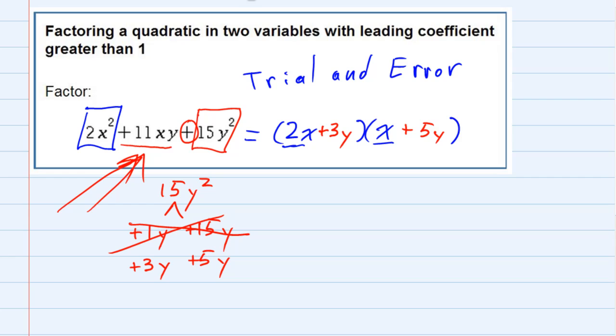And we'll see if that works. So switching the 3 and the 5, we will put the 5y over here and the 3y over here. And this time, the inside gives me a 5xy. The outside gives me a 6xy. And finally, we find the right combination that adds up to our 11xy that we need for the middle term.